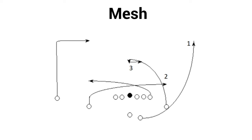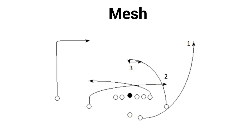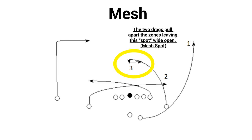The final passing concept we're looking at today is mesh. This is very commonly used. Two wide receivers run crossing end routes across the middle of the field, supposed to get as close as to high-five each other. Against man coverage, one receiver is supposed to get physical and force the cornerback off the other's route, leaving that receiver wide open. Against zone, it pulls the two middle linebackers away, and when paired with the mesh spot variation, a curl route opens up in the middle of the field.